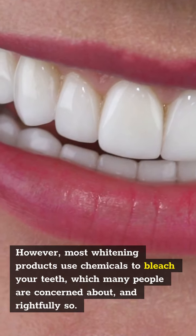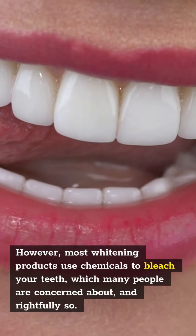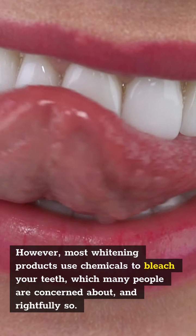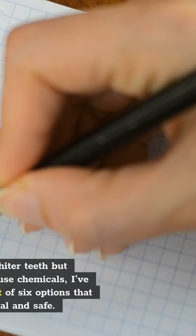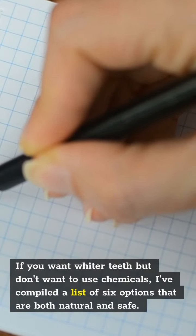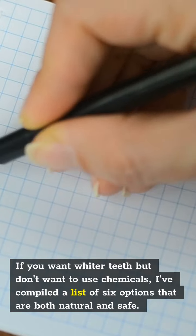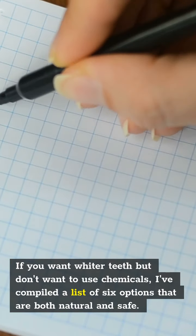However, most whitening products use chemicals to bleach your teeth, which many people are concerned about and rightly so. If you want whiter teeth but don't want to use chemicals, I have compiled a list of six options that are both natural and safe.